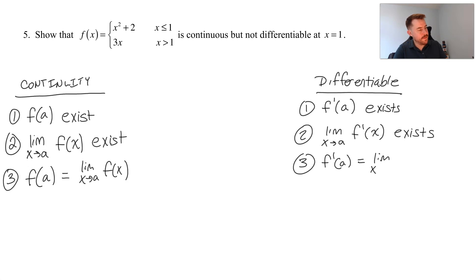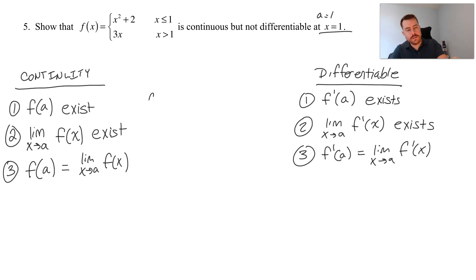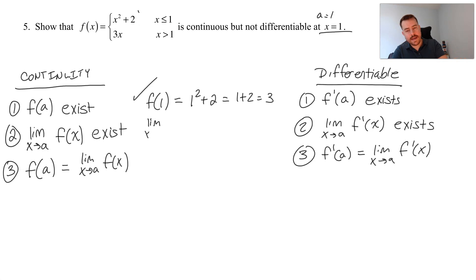Let's show that at x equals one this function is continuous — so a equals one. Let's figure out what f of one equals. Since x equals one is included in x less than or equal to one, we use the top equation: one squared plus two times one, which equals three. So f of one exists.